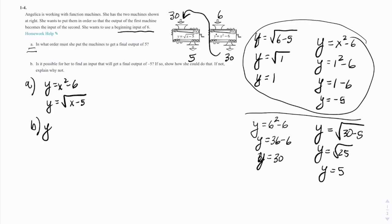So B would be, yes, it is. And the way we would do that is, first, we would use y equals the square root of x minus 5, and then we would use y equals x squared minus 6. And we would put in x equals 6 into that first function and then feed that into the second function.